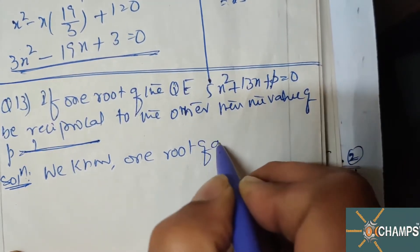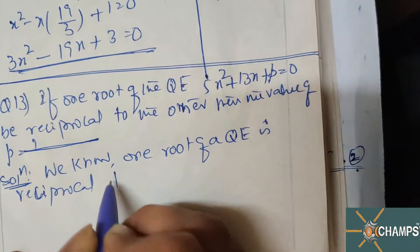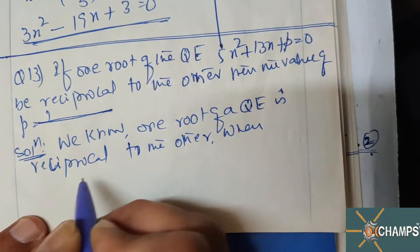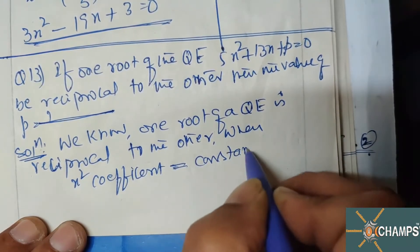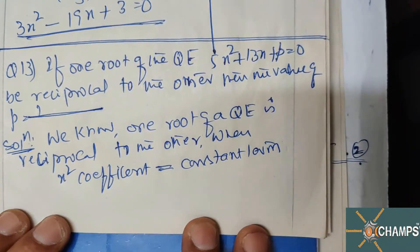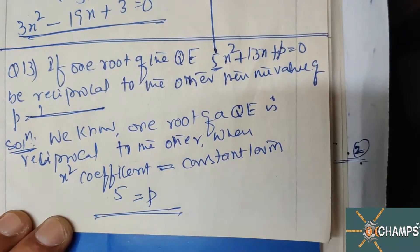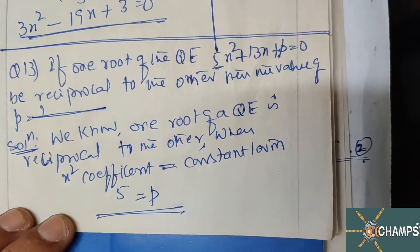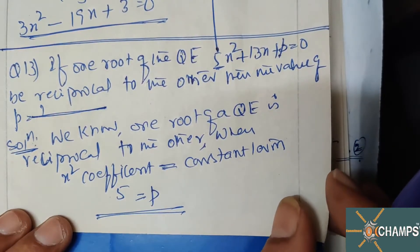We know one root of a quadratic equation is reciprocal to the other when the x²-coefficient equals the constant term. The x²-coefficient here is 5 and the constant is p. So 5 = p is the solution. With this, exercise 2F is over. Now moving to exercise 2G.